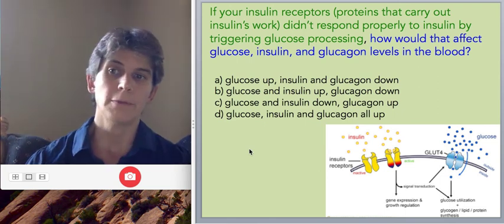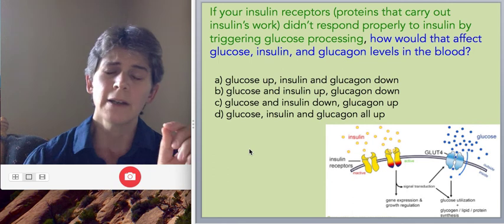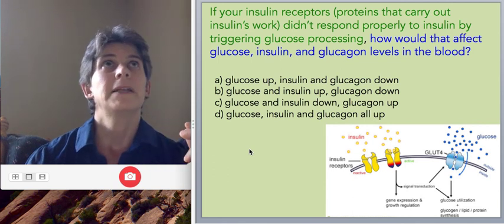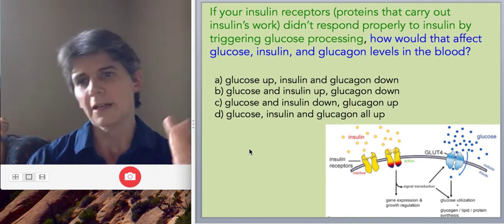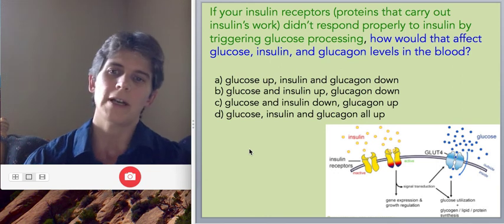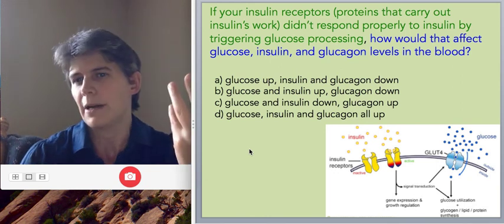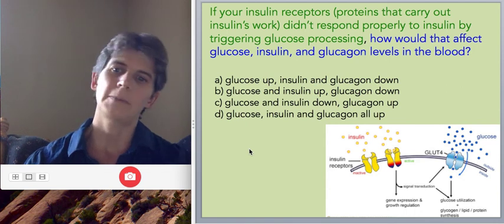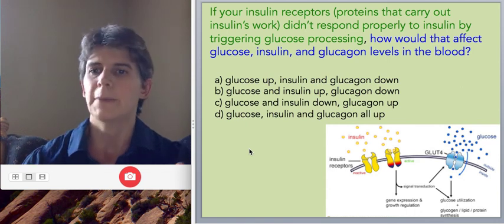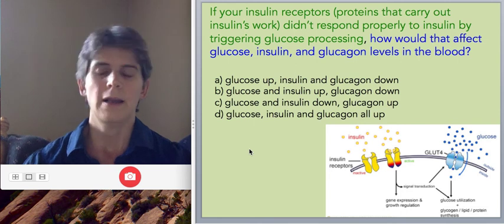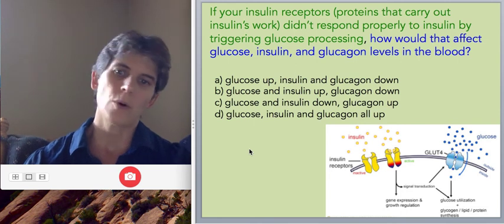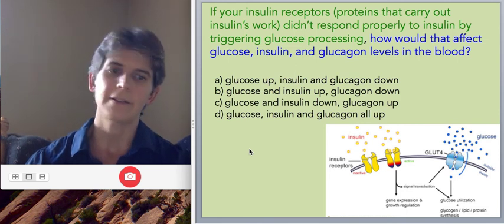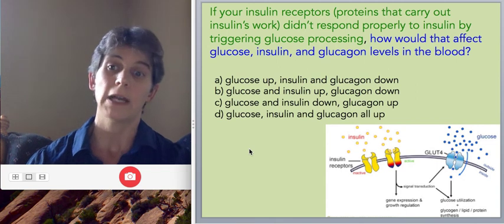This one is often difficult for people because they think that if insulin isn't working, it's going to give up, but that's just not how hormones work. They can't think about things. Insulin responds to blood glucose, so as long as blood glucose is high, we can expect that insulin will be high as well. This, of course, as many of you will have recognized, is essentially a description of type 2 diabetes.